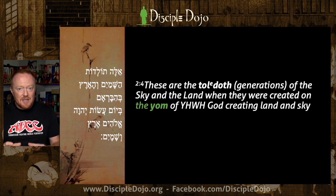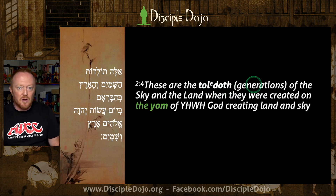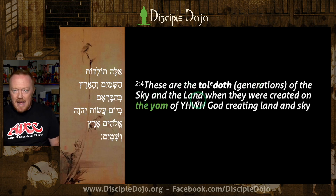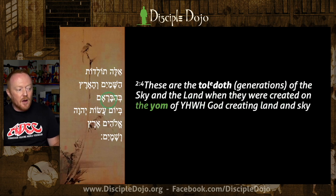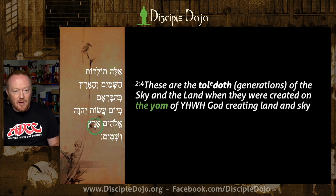It's one of the Toledot sections. It says 'ele Toledot' — these are the... This word Toledot is a plural from the word yalad, which means to bear, generate, bring forth, or give birth. Sometimes people say genealogies, sometimes 'this is the account of.' I stick with the woodenly literal 'generations.' These are the generations of the sky and the land — the heavens and the earth. 'When they were created' is literally 'in their being created' — the yom — on a day — and this is indefinite now — on a day of Yahweh God creating the land and the sky.